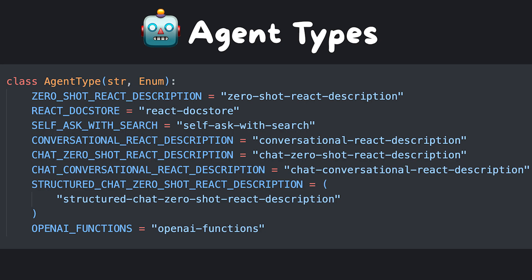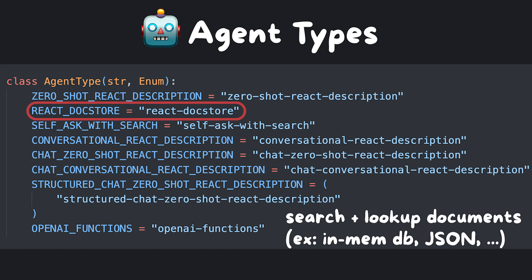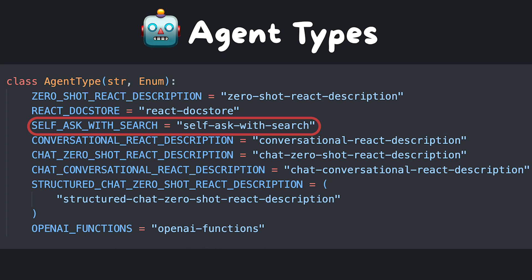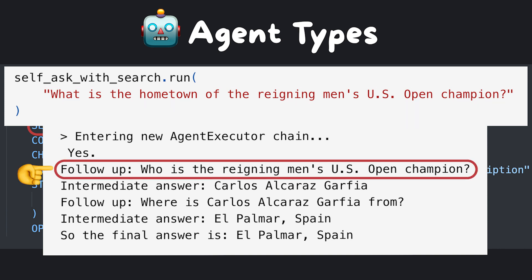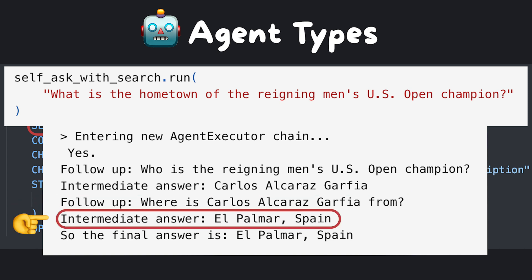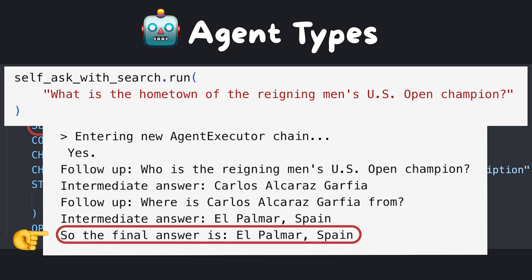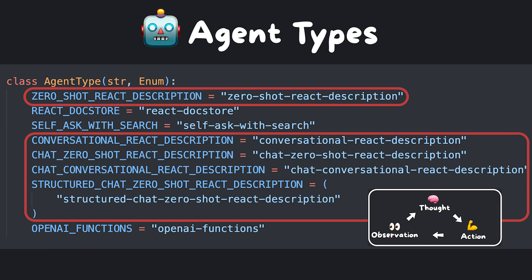LangChain supports multiple action agents. Everything with ReAct in its name goes through the same thought-action-observation loop. The ReAct DocStore uses the ReAct framework to search and look up documents within a doc store, as opposed to the more commonly used vector store abstraction. Self-Ask with Search works differently — for example, when asked the hometown of the reigning men's US Open champion, the agent first asks who the reigning champion is, gets a name as an intermediate answer, then asks where he's from to receive his hometown as a final answer. The agent basically asked itself a series of sub-questions and answered them until it arrived at a response.